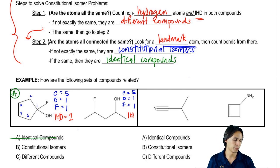Now let's take the IHD of the second compound. What's the IHD of the second compound? Zero. It's zero because there's no ring, no double bond, no triple bond. So are these IHDs the same? No.